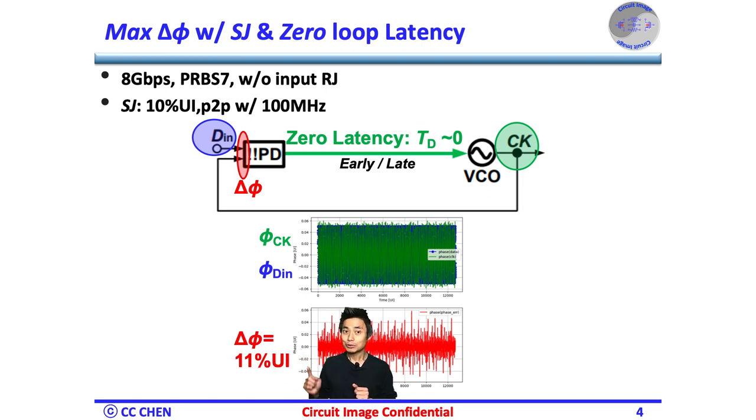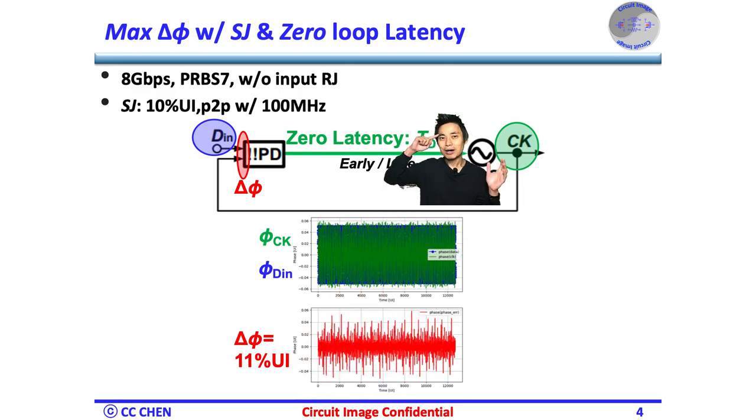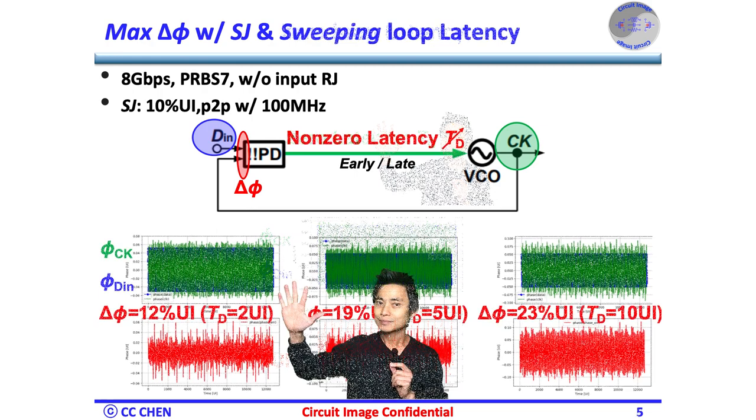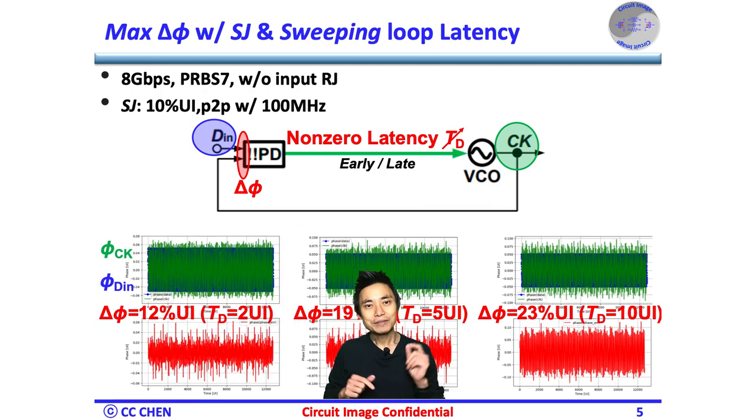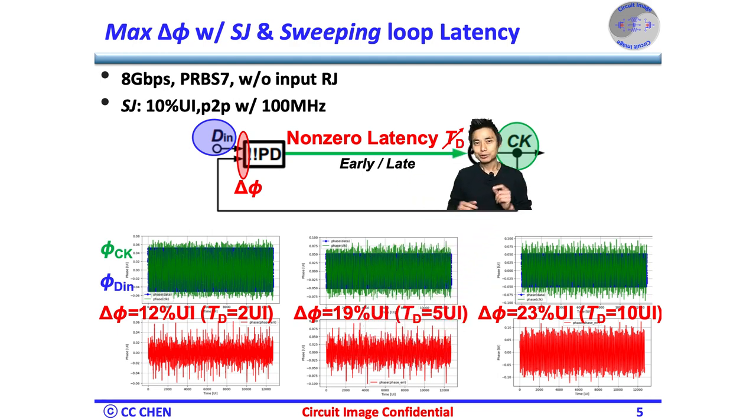What happens if we increase the loop latency? Think about the stability image for 5 seconds. Bingo! Any feedback loop would have stability concerns, especially if the delay in the loop is increased and results in positive feedback.